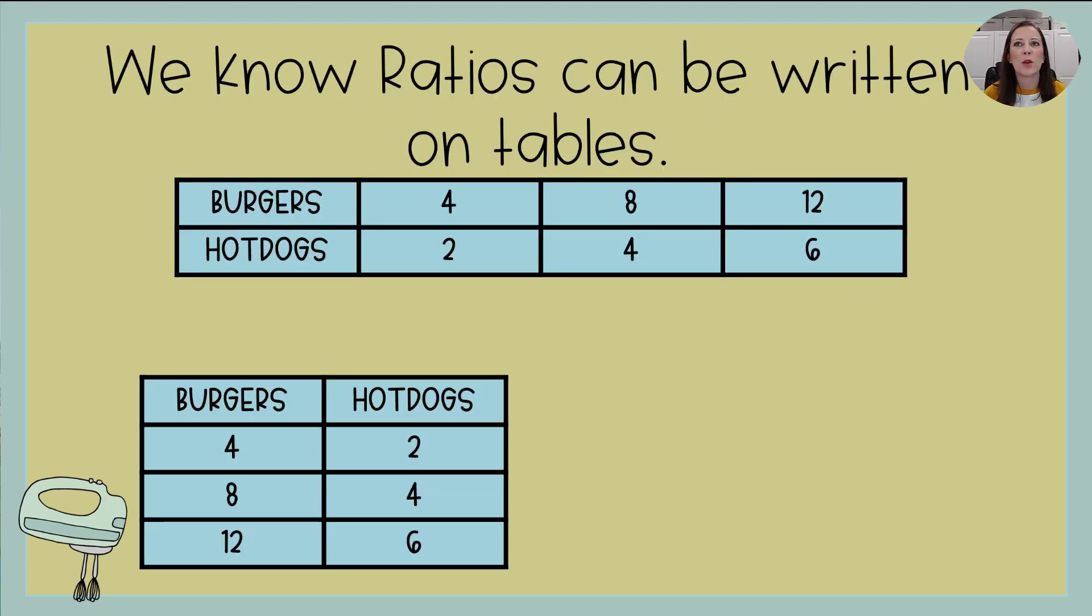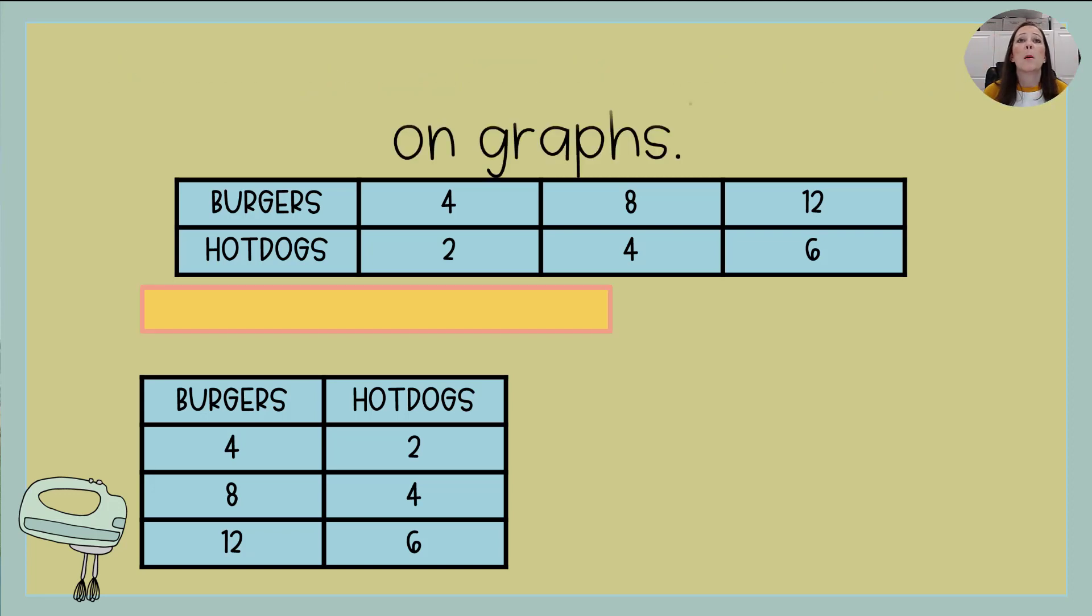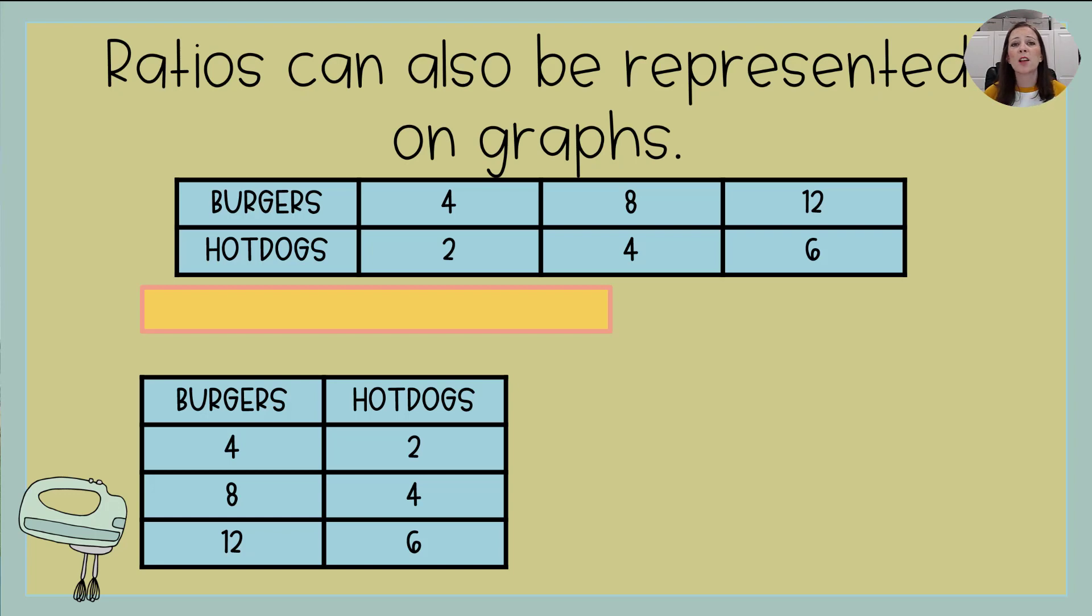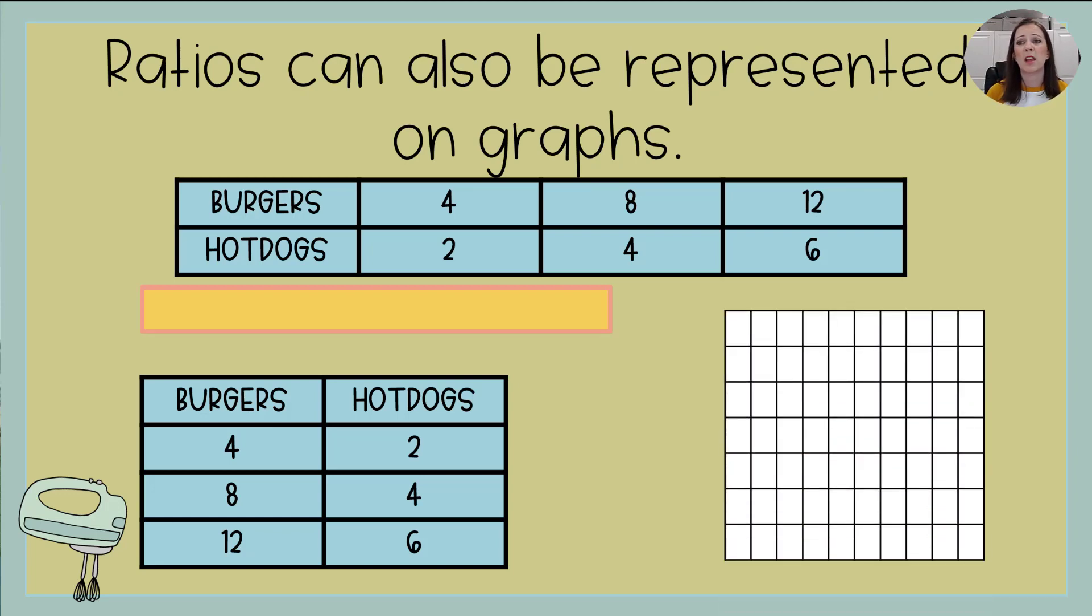We know that ratios can be written on tables just like this. I'm comparing burgers to hot dogs. It's the same set of ratios. It's just one table is side to side. One table is up and down. But ratios can also be represented on graphs. So we need to take a minute and just talk about the different parts of a graph and how we get those parts from the ratio tables.